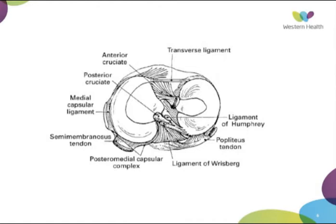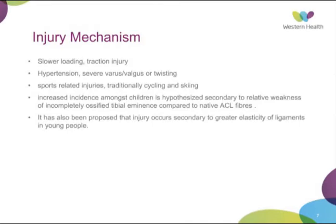The injury mechanism is the same as for an ACL injury in an adult — a slower loading traction-type injury. Typically it's a hyperextension or severe valgus/varus twisting injury to the knee, commonly from sports injuries. It's traditionally described in children occurring from bike accidents and skiing, usually with hyperextension. The increased incidence in children is hypothesised to be due to the relative weakness of the incompletely ossified tibial eminence compared to the ACL fibres — therefore the eminence gives way, whereas the ACL fibres attenuate but rarely rupture as they would in an adult.